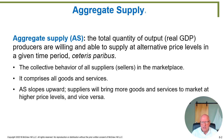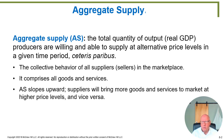It comprises all goods and services. Luckily, because it's something we've already seen before, the aggregate supply curve slopes upward just like a normal supply curve does, because suppliers are willing to bring more goods and services to market at higher price levels and are willing to produce lower amounts of output at lower price levels.